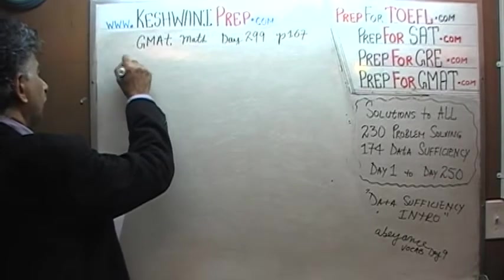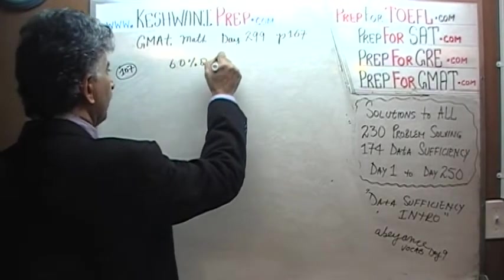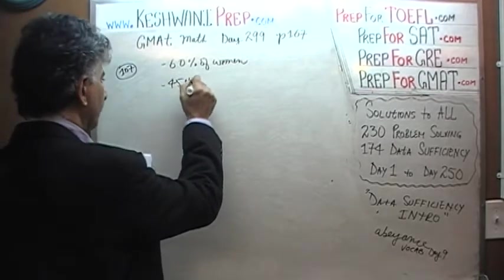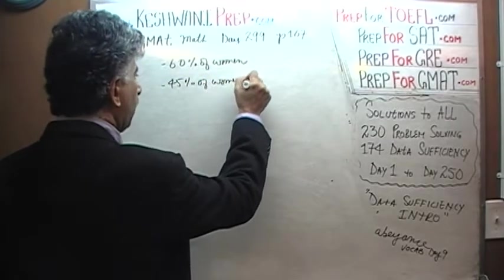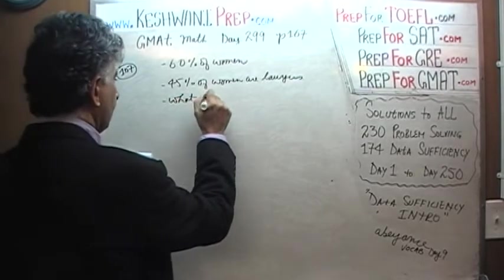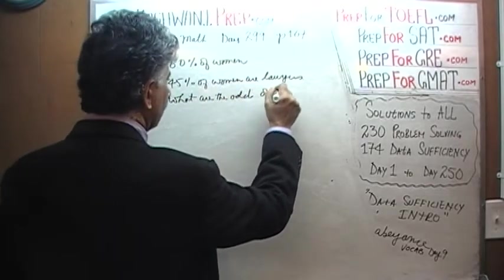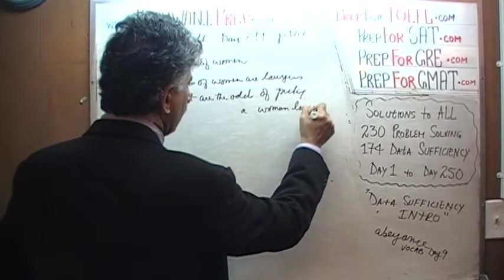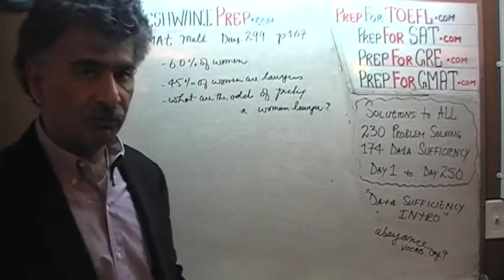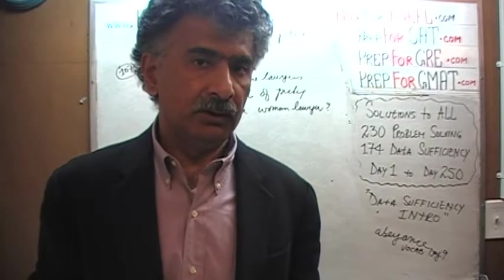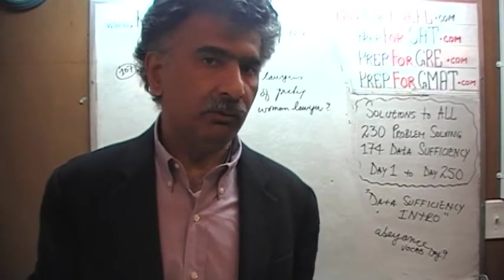Problem 107 on page 167 says that we have 60% women in a group of people. We are also told that 45% of these women are lawyers. The question is, what are the odds of picking a woman lawyer? If you were to pick one person at random from this group, what are the chances that the person we picked turns out to be not just a female, but a female who is a lawyer?